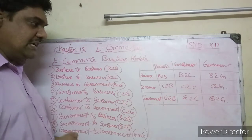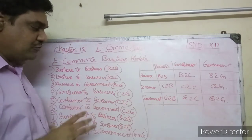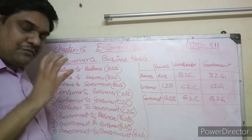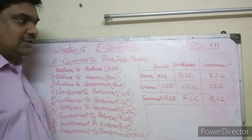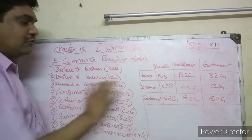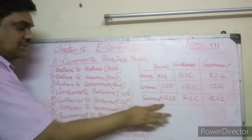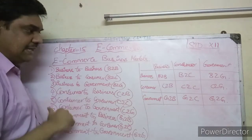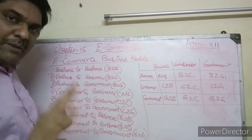It's easy to get confused, but to avoid confusion, you can use a table to organize them, so you can easily understand all nine models.